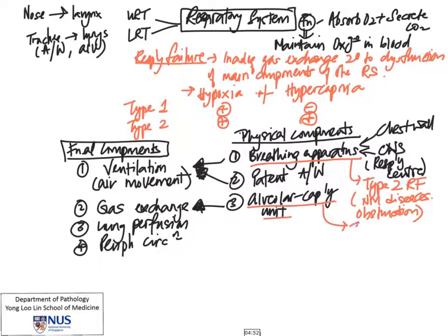If this is disrupted, this can result in type 1 respiratory failure, which is hypoxia without hypercapnia. A good example would be pneumonia, where the alveolar spaces are not filled with air but rather with inflammatory exudates of cells and exudative fluid.